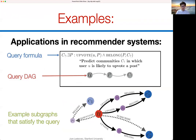Another example: predict the community C in which a user is likely to upload a post. The predictive query starts with the user, goes over an 'upload' relation to a post, and that post 'belongs to' a community. In a small knowledge graph, C3 is an answer via upload and belong, C2 is also an answer, but C1 is not because the relation type is 'download and belong' not 'upload and belong'.